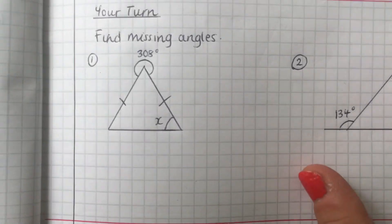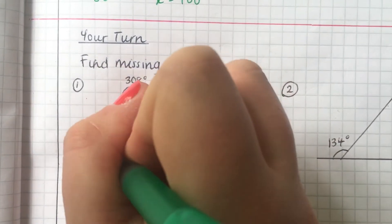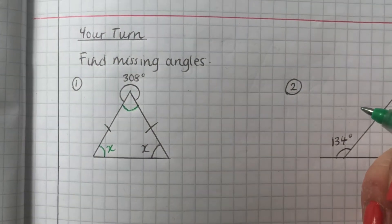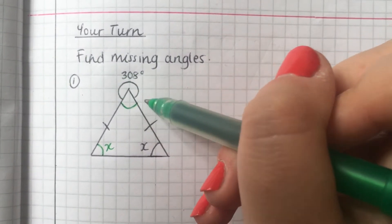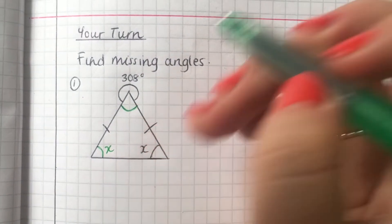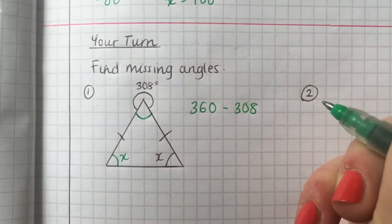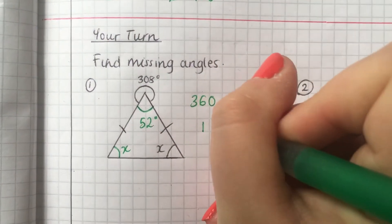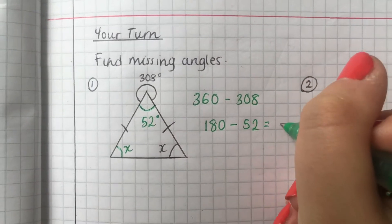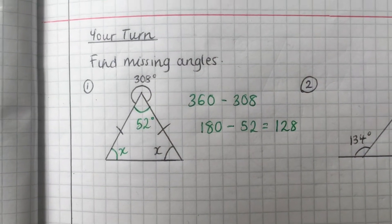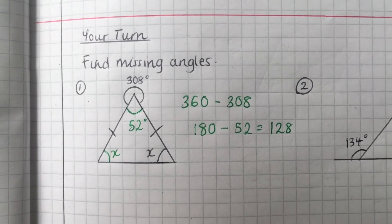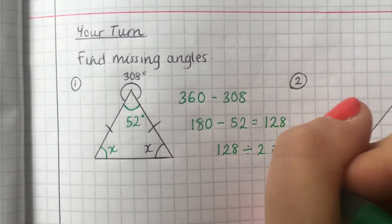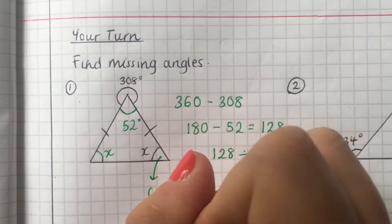This first triangle is an isosceles triangle — these two sides are the same, which means this angle and this angle are equal, so this is also x. To work out these angles, we need to know the other angle in the triangle. We can see it involves 308, and angles around a point add up to 360, so we do 360 minus 308 to get 52 degrees. Then we do 180 minus 52 to get 128. Since 128 is what both base angles add up to, we divide by 2 to get x. So 128 divided by 2 gives 64 degrees — x is 64 degrees.